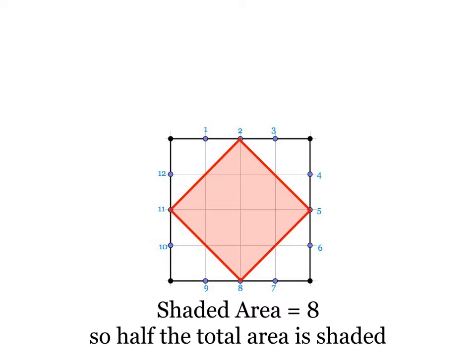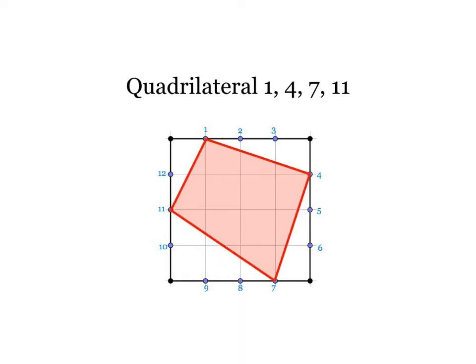That's pretty interesting and I'm curious right away if that will ever happen again. The best way to find out I think is just to try another example, so let's try this one. This is quadrilateral one four seven eleven since I've just connected those four points one to four, four to seven, seven to eleven, eleven back to one.